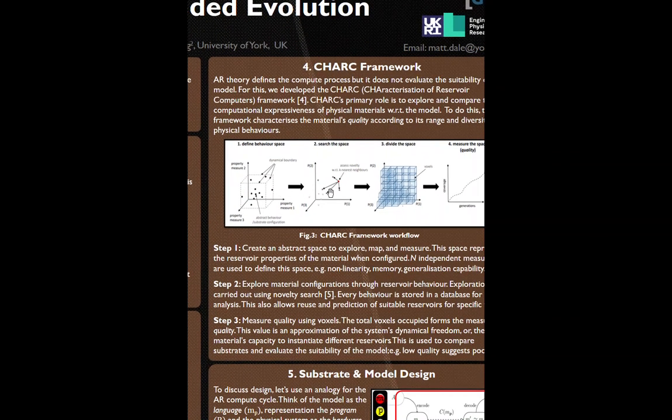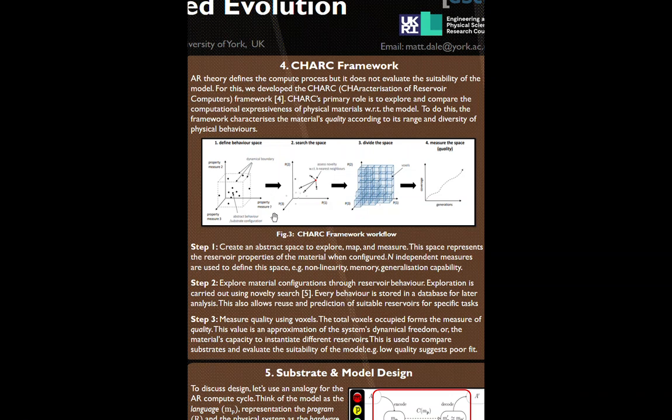In figure 3 we have the step-by-step workflow. Step 1 we create an abstract space to explore, map and measure. This represents the reservoir's properties of the material when configured. In this space we use n independent measures, for example non-linearity, memory or generalisation ability.